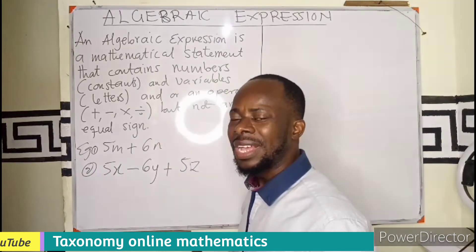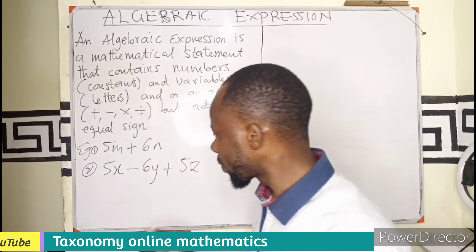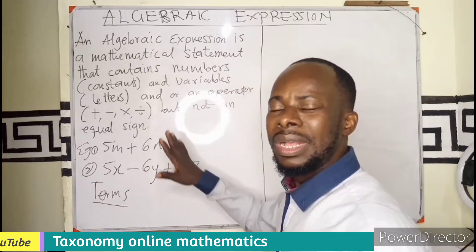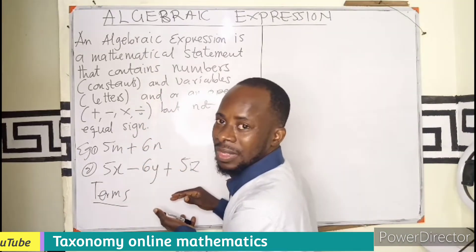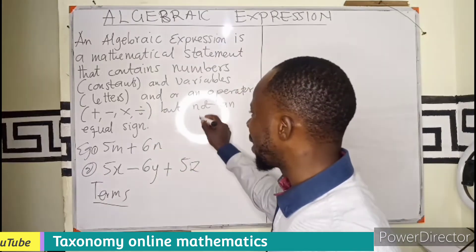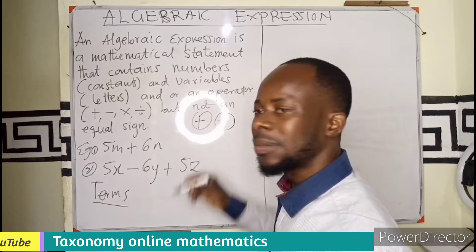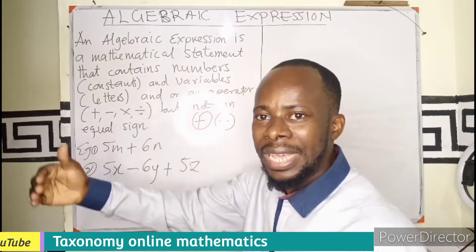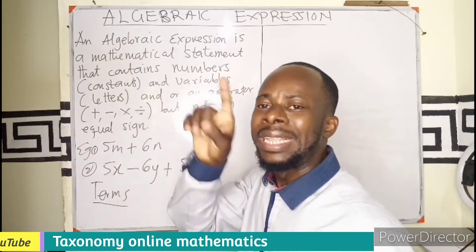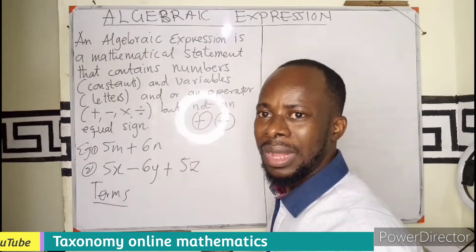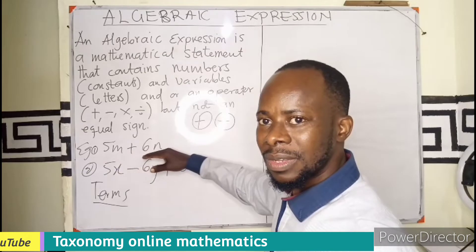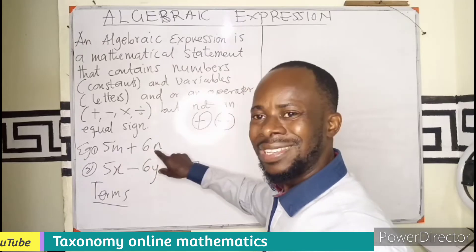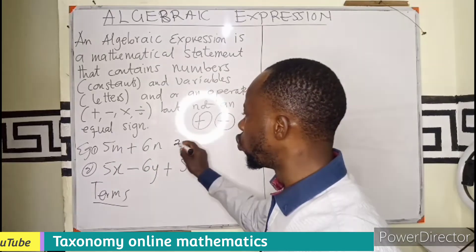Every algebraic expression has what they call terms. When we talk of terms, we are referring to any mathematical expression that is separated by plus or minus. Any mathematical expression that is separated by plus or minus — that becomes a term. So in the first example, the plus is separating the two terms: 5M and 6N. So we have only two terms.